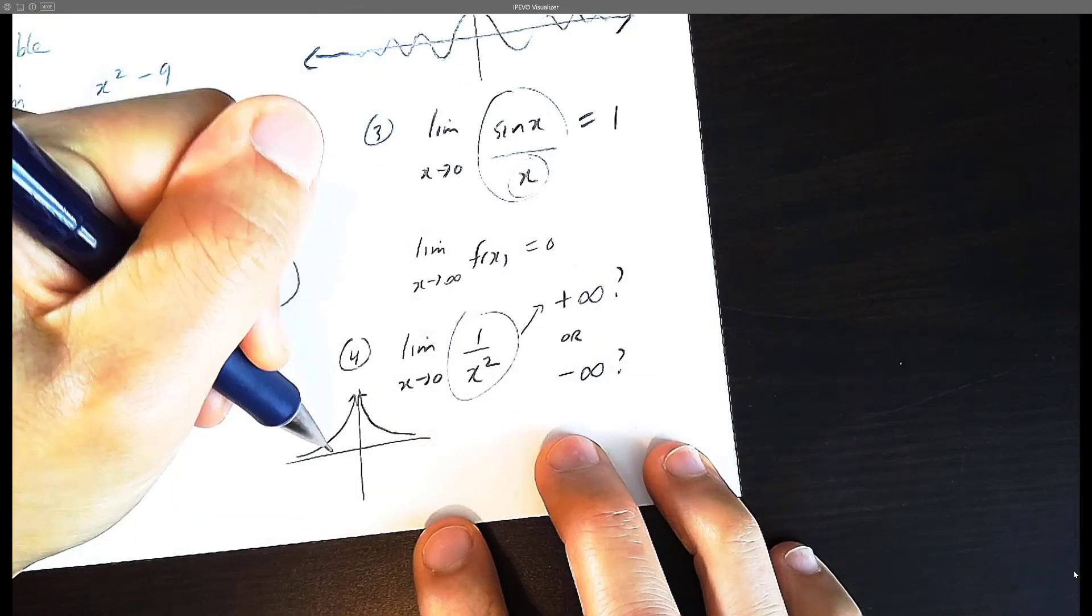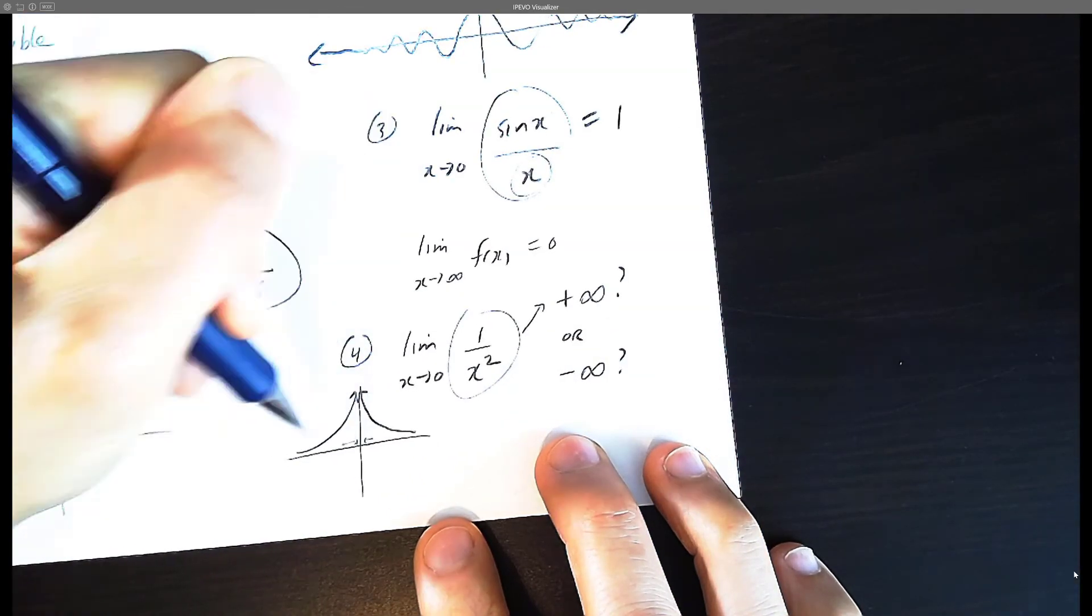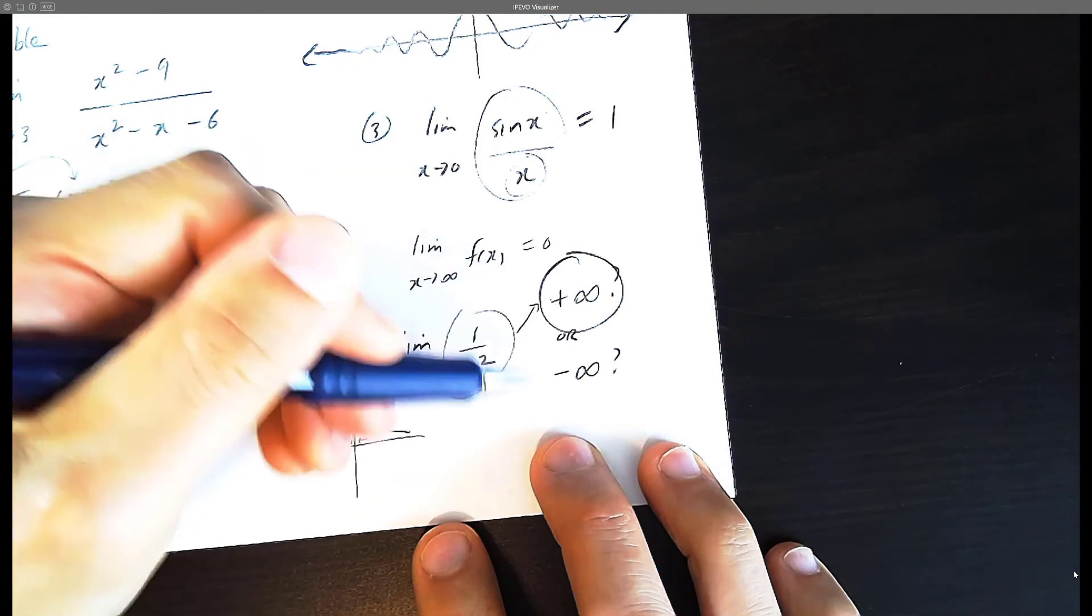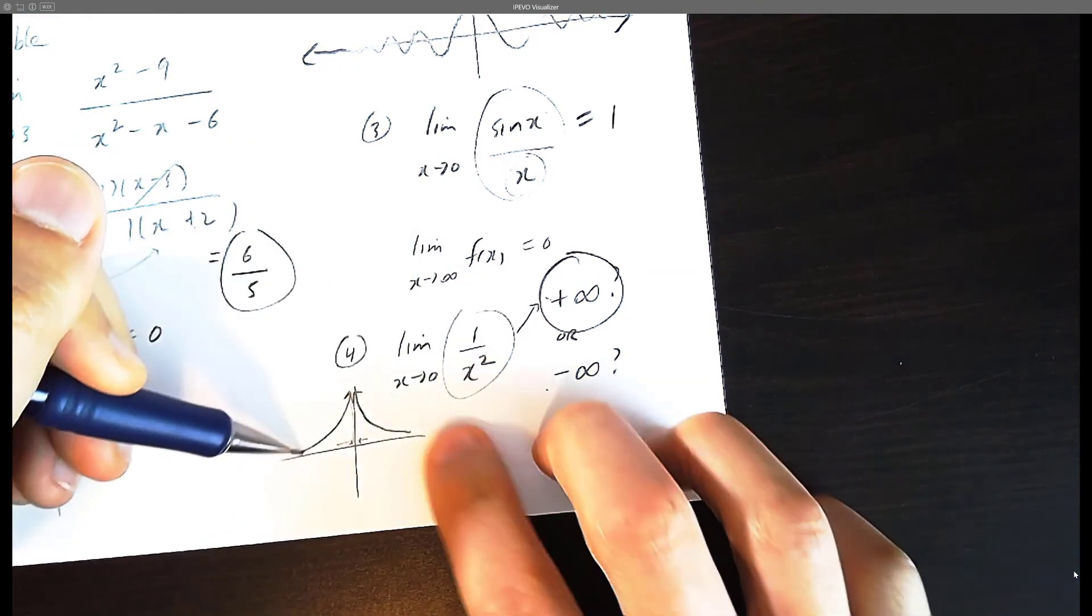So as you can see this graph here, as you approach 0 from the left and right, it's tending towards positive infinity. So if you're given a multiple choice between positive or negative infinity, choose positive because this graph is going upwards.